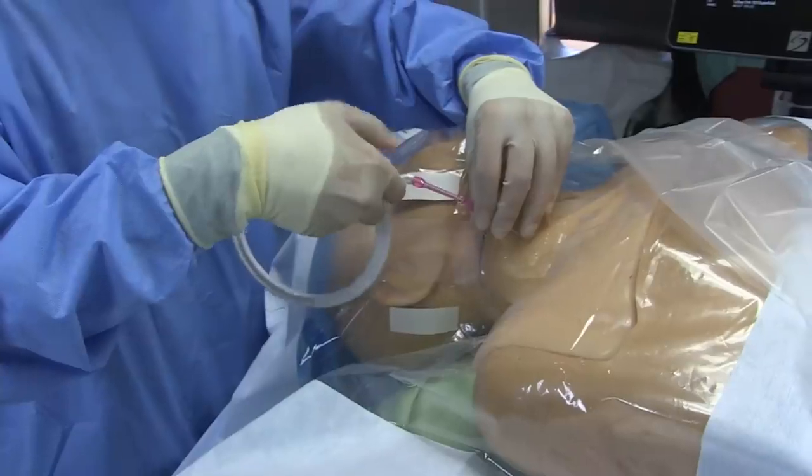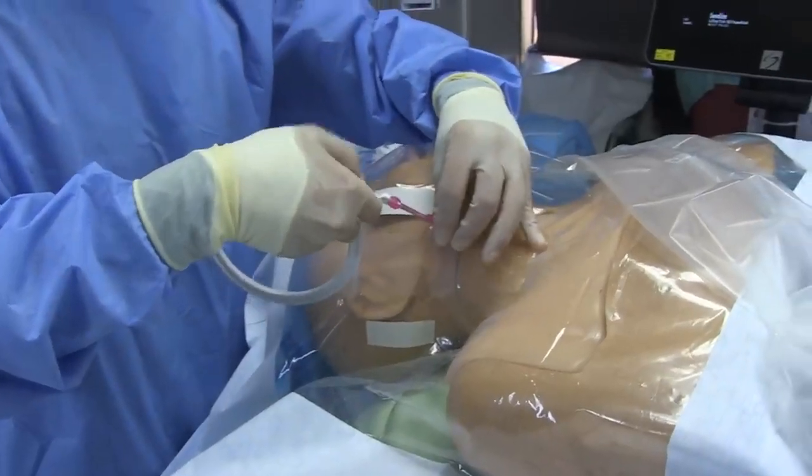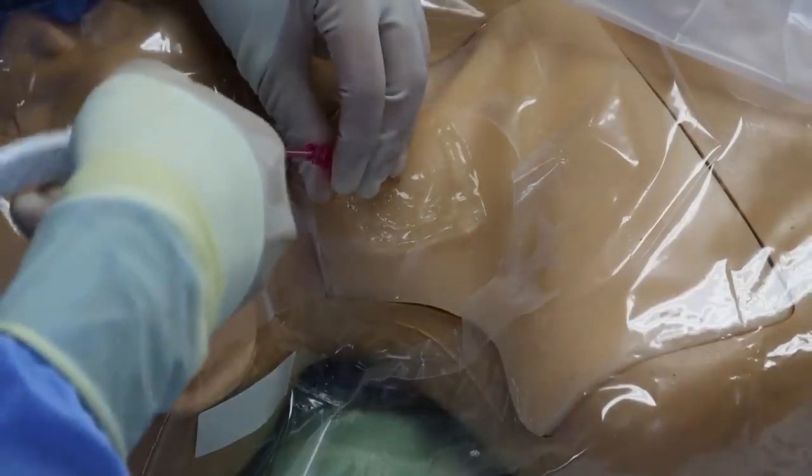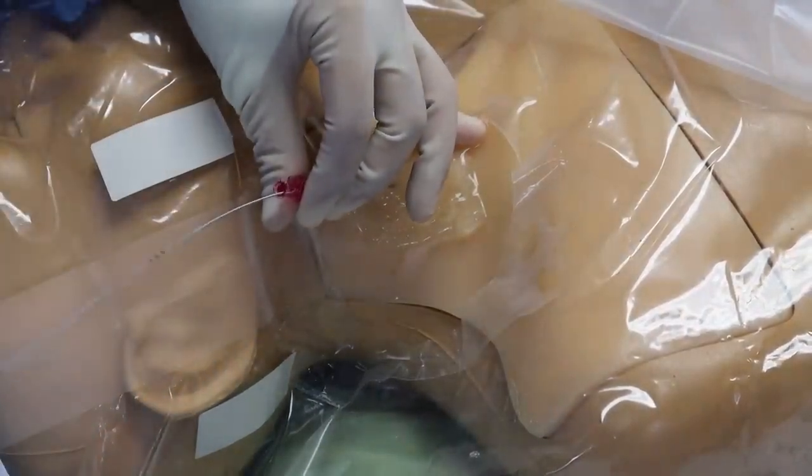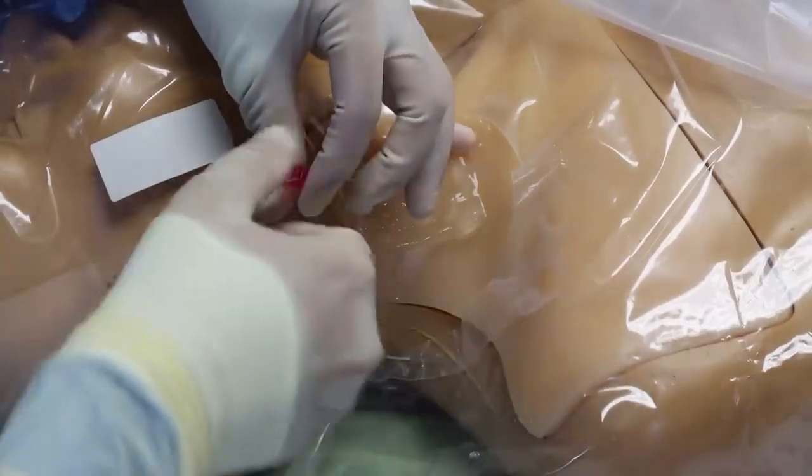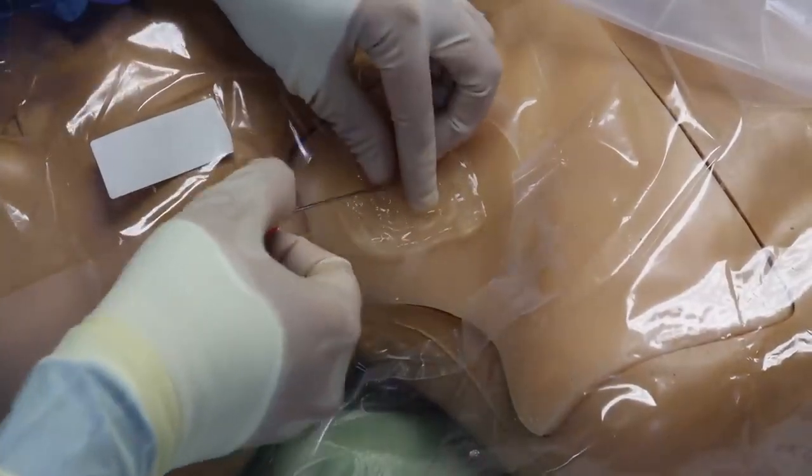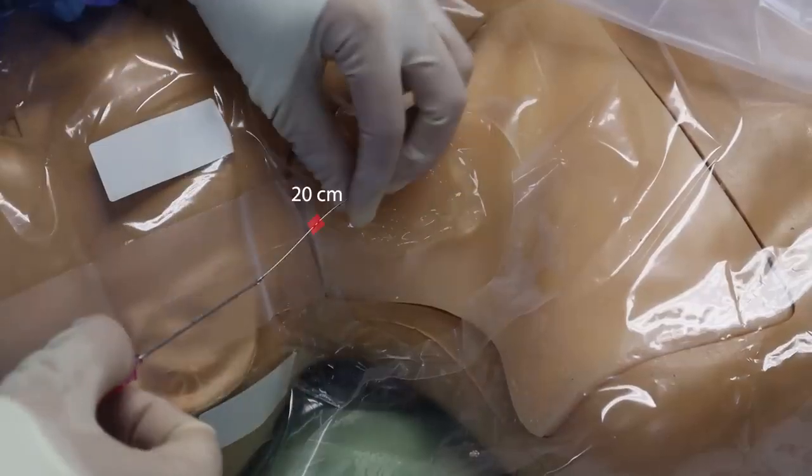Now grab that wire and start feeding it through the needle. The wire should advance fairly smoothly. If it does not, something is wrong. You should stop and reassess. You only need to feed as much wire as the catheter is long. Any more is unnecessary. If your guide wire is like mine, the second or two line marking on the wire identifies 20 cm. And so I advance until that mark is at the skin.